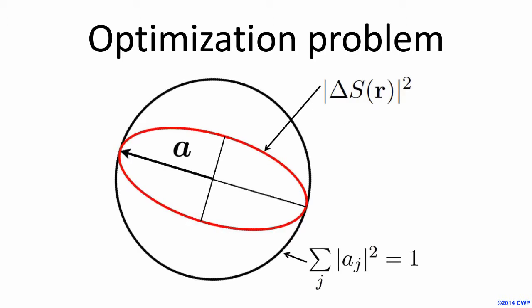If you consider the problem pictorially, the constraint placed on our weights is a sphere in three dimensions, and our objective function is an ellipsoid. Our vector of optimal weights will be where the ellipsoid touches the sphere. To find this vector, we use the fact that we have a quadratic objective function and we form a Hermitian matrix. We then rotate that matrix to the principal axes and find the largest eigenvalue. The eigenvector that corresponds to that eigenvalue is our vector of optimal weights, and we repeat this process for every source array location and for all receivers.